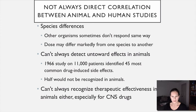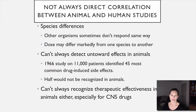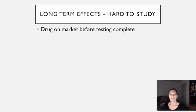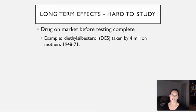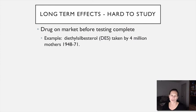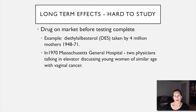Long-term effects are hard to study — you need a lot of people on drugs for a long time before you see them. An example is diethylstilbestrol, abbreviated DES, which was given to pregnant women from 1948 to 1971 in the belief it would reduce pregnancy complications like morning sickness and miscarriage. In 1970, two physicians at Massachusetts General Hospital were talking about two young women of similar age who both had vaginal cancer — a highly unusual finding for that age group.